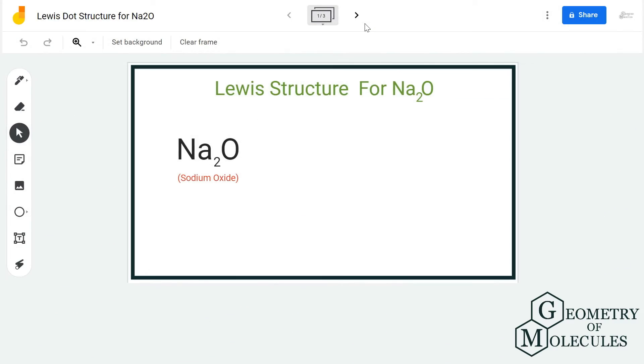Hi guys, today in this video we are going to look at the Lewis dot structure for Na2O, which is also known as sodium oxide. Now, unlike other molecules or compounds, this one is an ionic compound because it has an ionic bond.